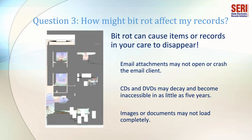Question 3: How might BitRot affect my records? BitRot can cause items or records in your care to disappear. If they do not disappear, they may be irreparably damaged. For example, an archived email account sitting idle may have older emails with attachments that simply cannot be viewed or that crash the email client when you try to open them. Files copied onto CDs or DVDs as little as 5 years ago may no longer be accessible due to natural decay. With born-digital or digitized images, you may open one and find it doesn't completely load — only a portion is visible, the rest garbled pixels and colors. In each of these cases, you will not be able to access an original document you are trying to preserve.